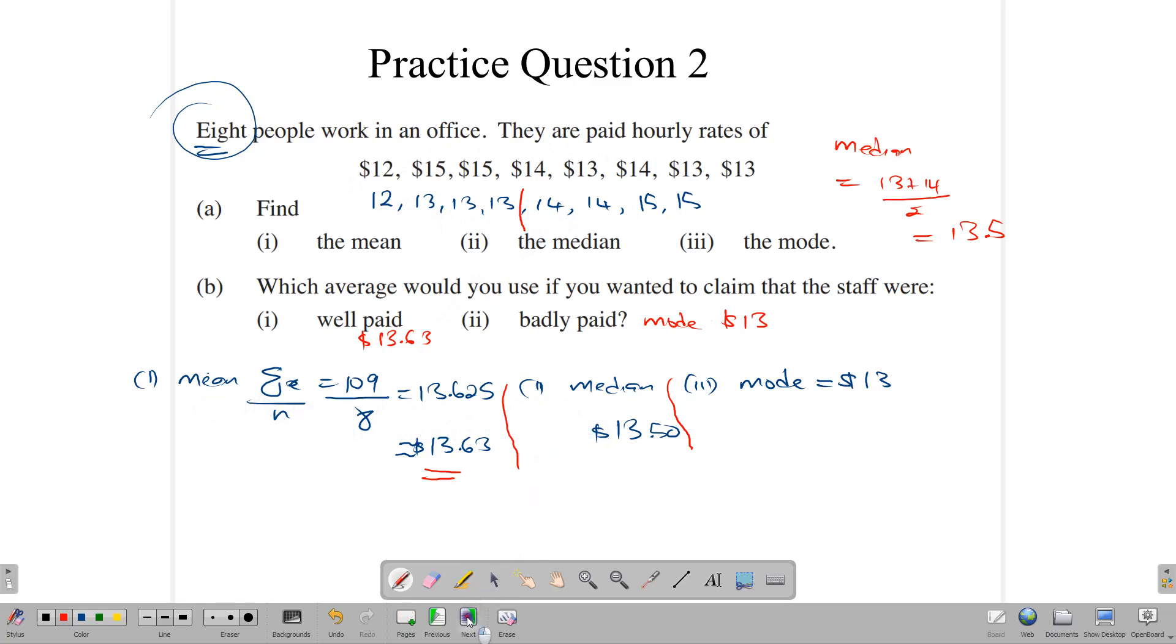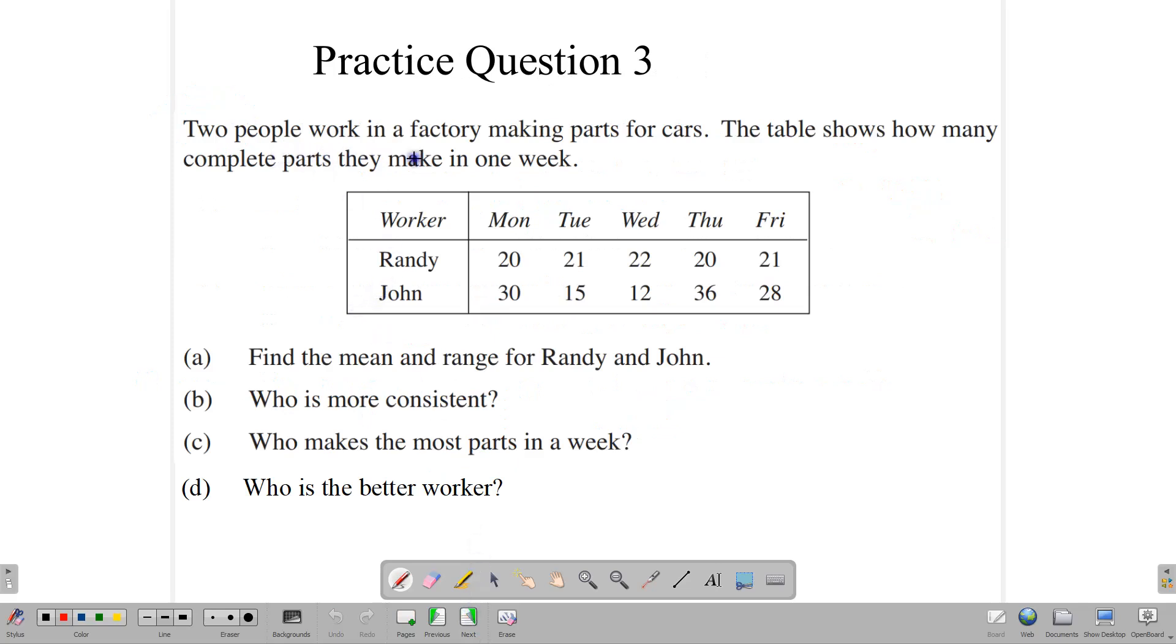Let's look at a final question. And here we have two people working in a factory making car parts. The table shows the complete parts they make in one week. So we have Randy, we have John, and we have the number of parts that they make per week. Now, find the mean and the range for Randy and John. Let's talk about the range first. Range is the difference between the lowest and the highest value. So the range for Randy would be the highest number, which is 22, minus the lowest number, which is 20. So Randy has a range of 2. Whereas John, his highest number is 36. And his lowest number is 12. So we have a range of 24.